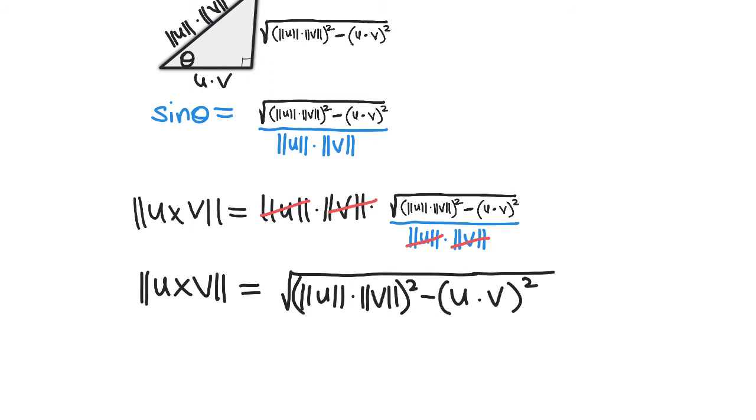Based on properties of basic mathematics, we can write this as ||u||² ||v||² minus (u dot v)².